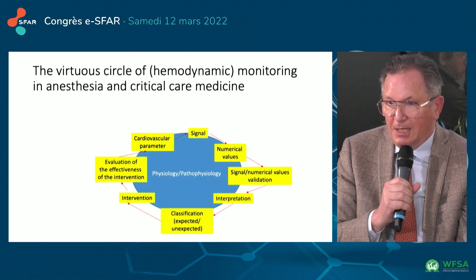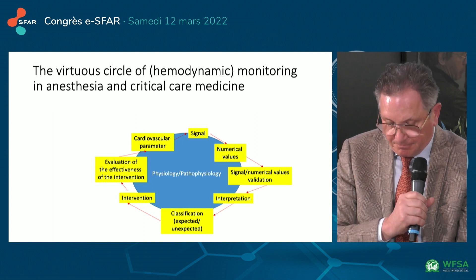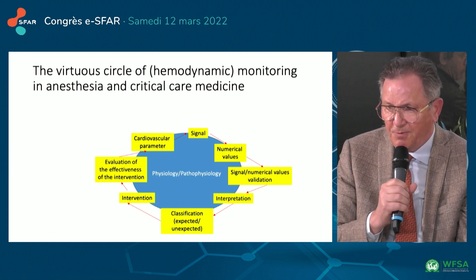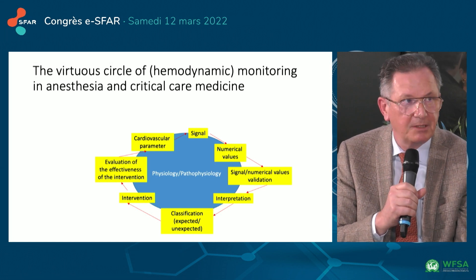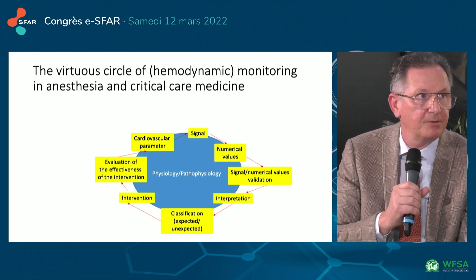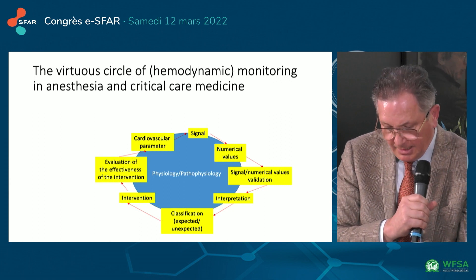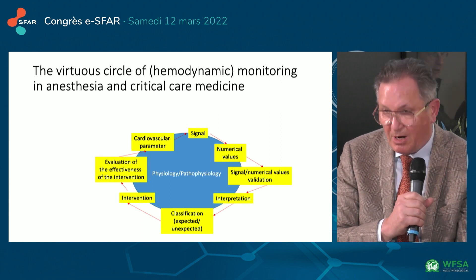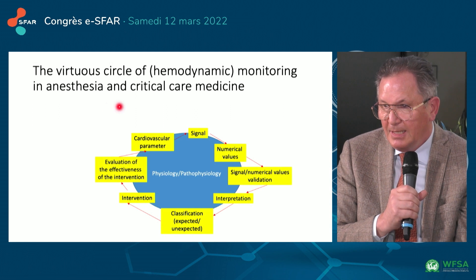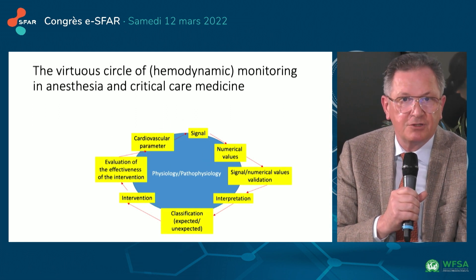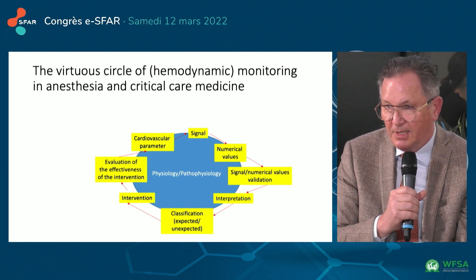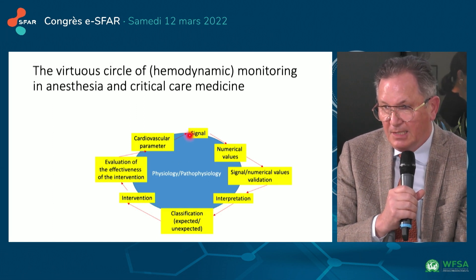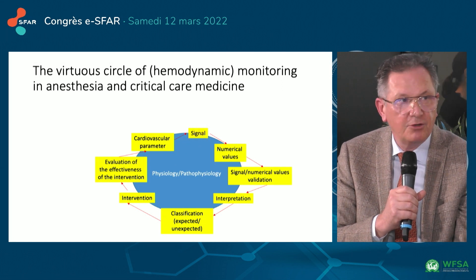The first conceptual element I would like to discuss is what I call the virtuous circle of hemodynamic monitoring, which can apply to any type of monitoring. You start with a cardiovascular parameter, and you have some physiological knowledge about what it means for cardiovascular well-being. You get a signal — such as arterial blood pressure — and from that signal you get a numerical value.